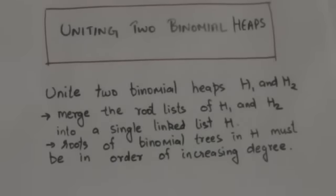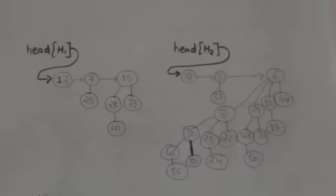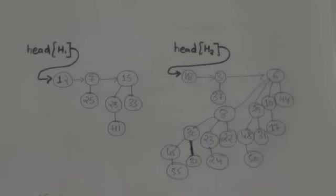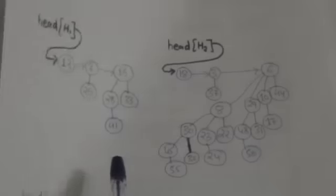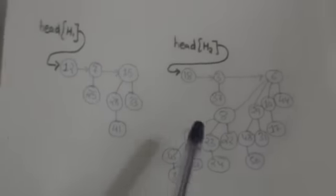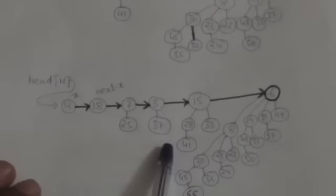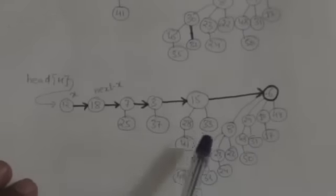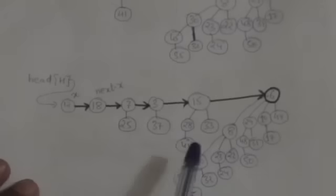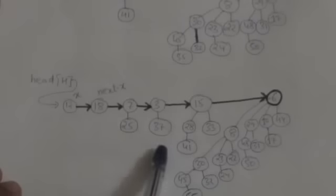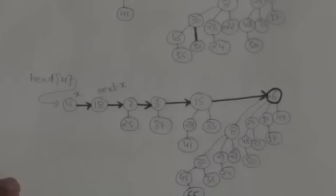Suppose we have to unite these two binomial heaps. First of all we will merge the root lists of these two binomial heaps into a single linked list, which will contain the roots of our binomial trees of both root lists in the order of their increasing degree. Here we have merged the root lists of these two binomial heaps into a single linked list, and this linked list contains the roots of binomial trees of both root lists in the order of their increasing degree.